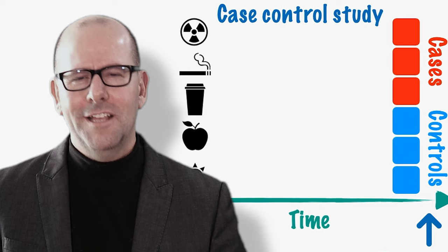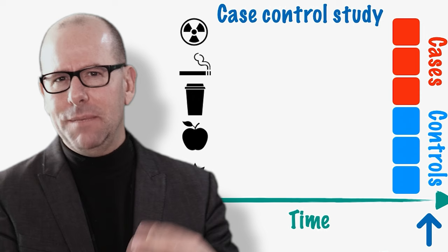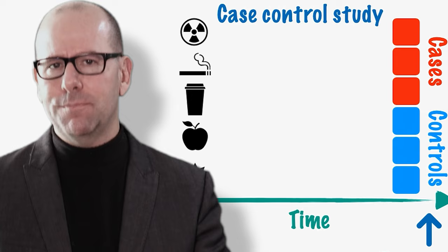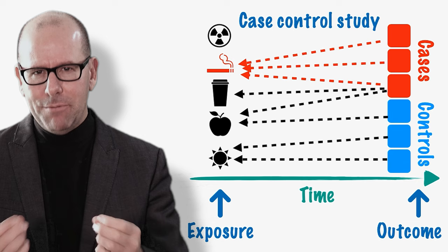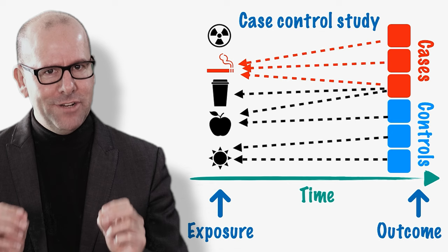Let's say we identified a very rare kind of cancer — you can use case control studies for a very rare outcome. We can find those people through hospital records, create a control group, and ask whether there's a difference in exposure. Looking back at histories, we might identify that the rare cancer group were almost all smokers, while the control group mostly weren't. That provides us with evidence of what we call a correlation. It doesn't mean causation — there's a relationship between the exposure and the outcome, but not necessarily a causative one.